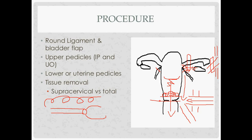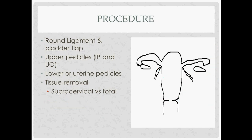If doing a total hysterectomy including the cervix, you conveniently have an opening because you just opened the vagina. You can deliver the uterus through the vagina and then create the vaginal cuff. So there are two ways to remove tissue depending on whether you are leaving part of the cervix or not.